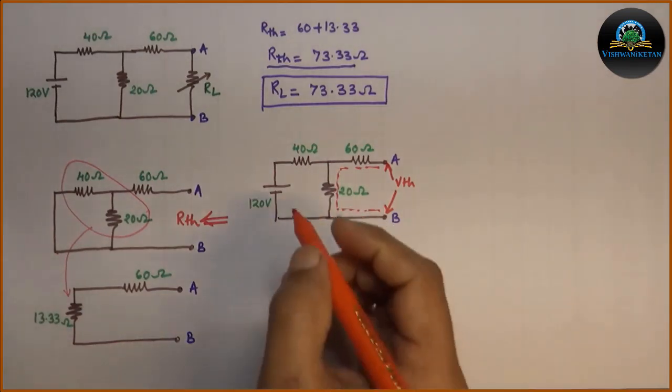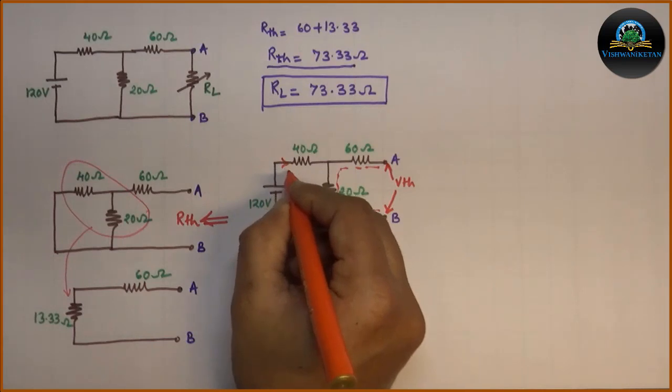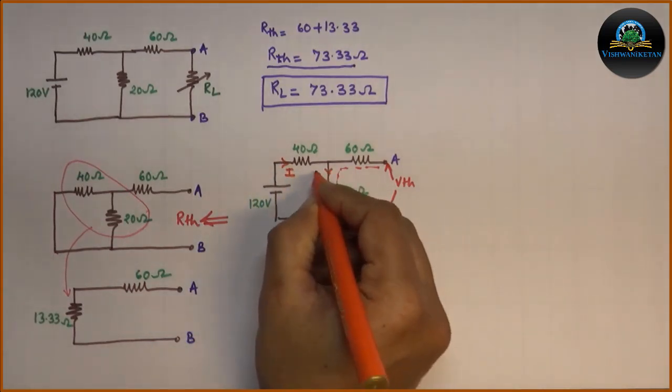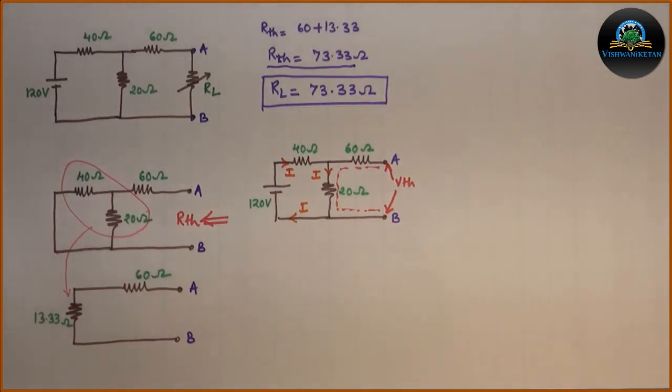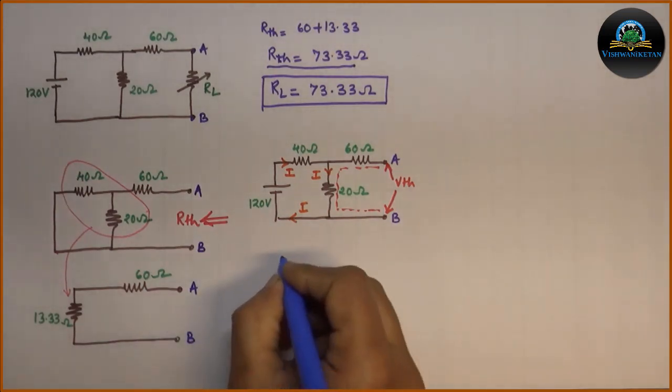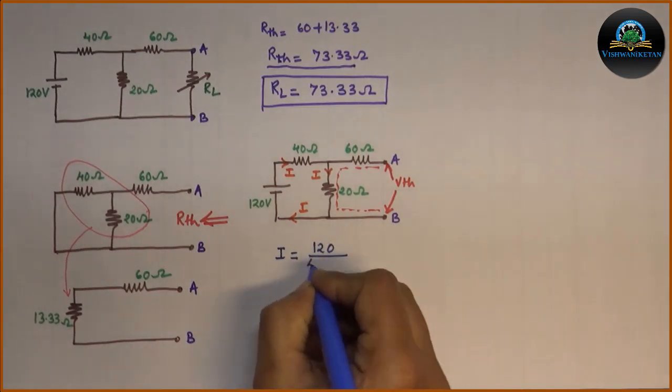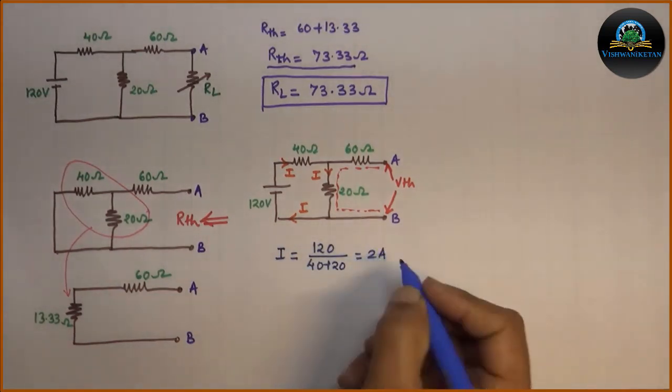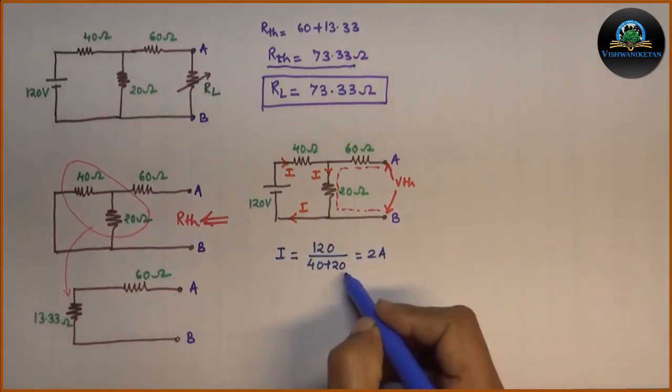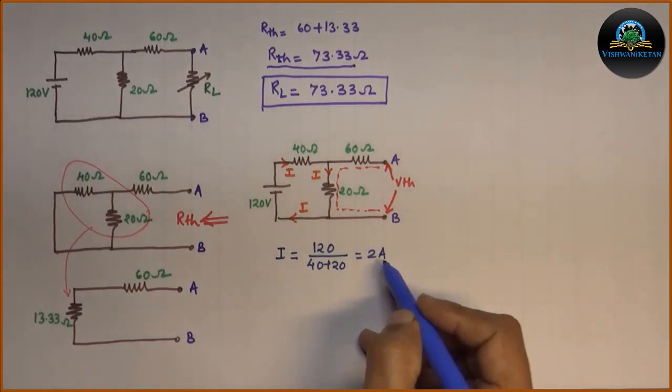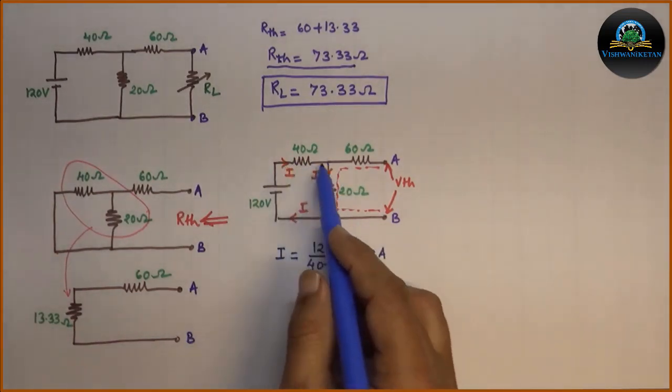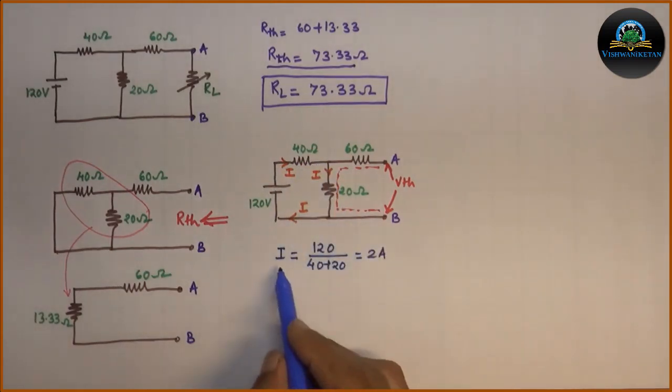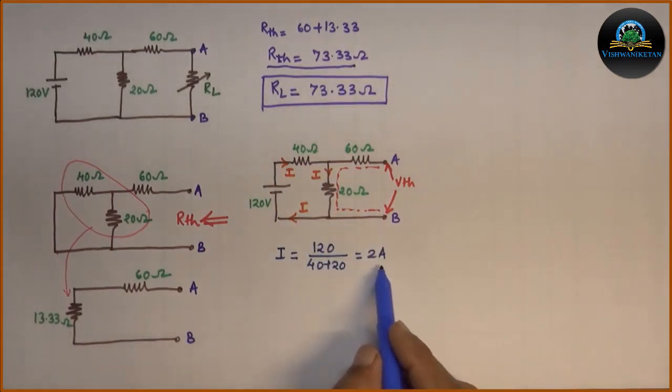We will mark the current flowing in the circuit, which is I. By Ohm's law, we can calculate this I as 120 divided by 40 plus 20, that is 2 ampere. As 40 ohm and 20 ohm become series for this current path, I will get as 2 ampere.